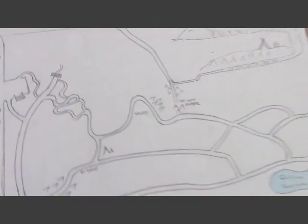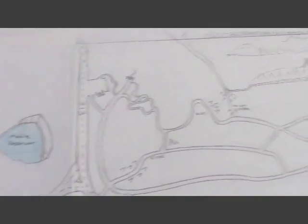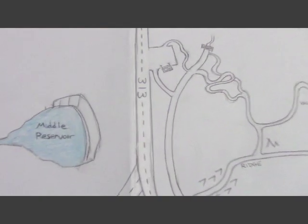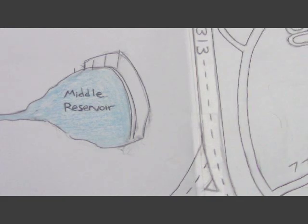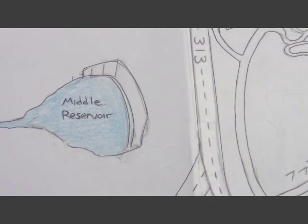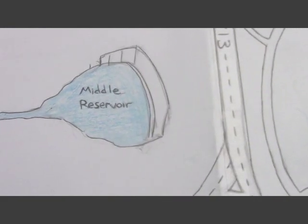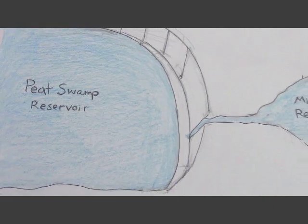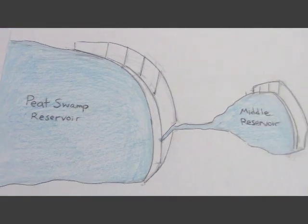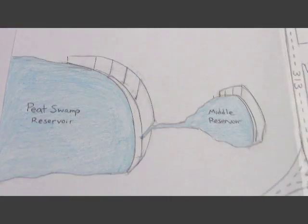But there's this huge area over there called the Naugatuck State Park. And across 313 over here, there's what's called the Metal Reservoir. It's a little tiny, it's more like a pond, but it has a dam and a waterfall there. And that leads from a larger reservoir, a much larger reservoir called the Peat Swamp Reservoir.